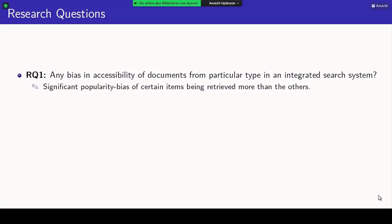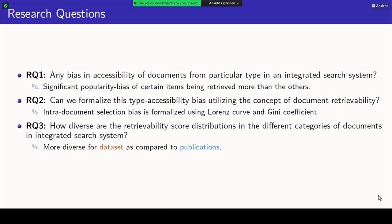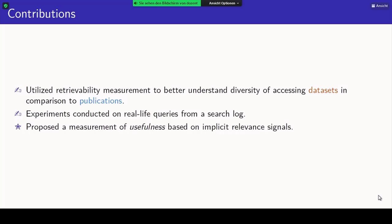In answer to the research questions: first, we observed a significant popularity bias among categories — publications and datasets. Second, using retrievability, particularly Lorenz curves and Gini coefficient, we can formalize this type accessibility bias. Third, the distribution of retrievability scores is much more diverse for datasets than for publications. As a contribution, we utilized the retrievability measure to better understand the diversity of accessing datasets versus publications, conducted on real-life query search logs, and we also propose the concept of usefulness.